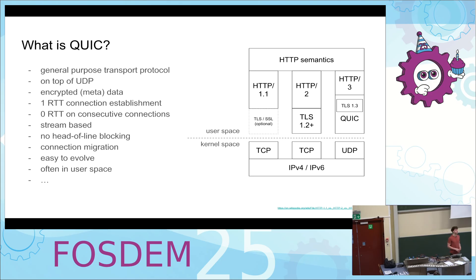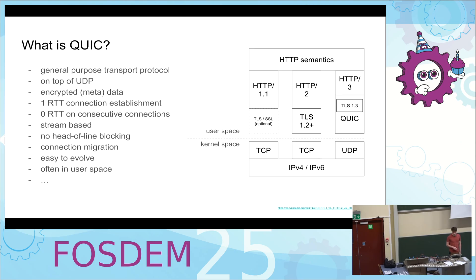QUIC has fancy features like connection migration. So if you're at home on Wi-Fi and you go outside switching to 5G, the connection can migrate between those two networks. It's easy to evolve because a lot of QUIC is encrypted, especially the transport part. Boxes in the middle cannot make assumptions on many properties of the protocol, so it's easier to evolve QUIC at the two endpoints. Relevant for this talk, it's often implemented in user space on top of UDP — always on top of UDP, but mostly in user space. There are kernel space implementations; the folks at Microsoft do that, but we'll focus on user space QUIC here.